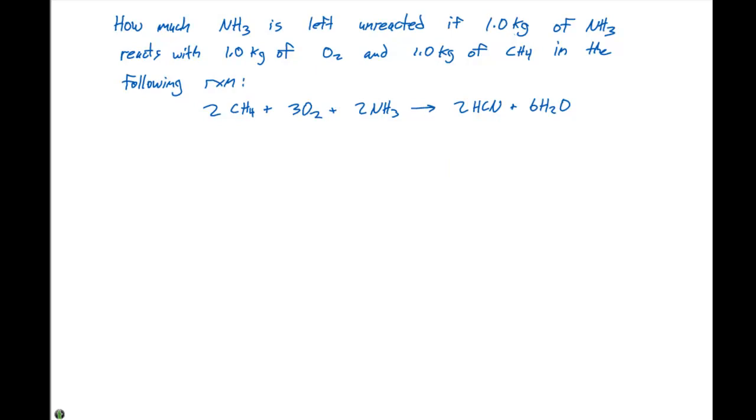In addition to calculating limiting reactants and how much of a product is produced, we can determine how much of one of the other reactants is left unreacted. In this example, we're going to ask how much NH3 is left unreacted if 1.0 kg of NH3 reacts with 1.0 kg of oxygen and 1.0 kg of methane in the following reaction.